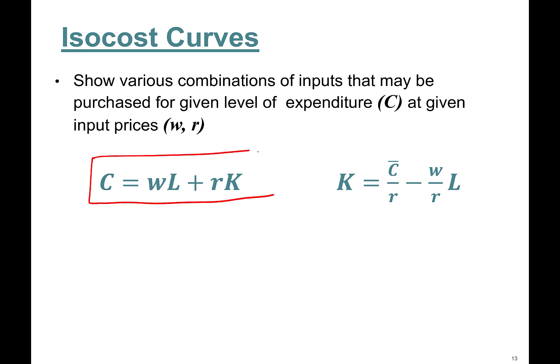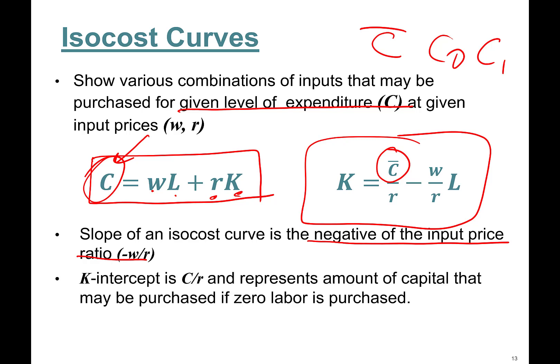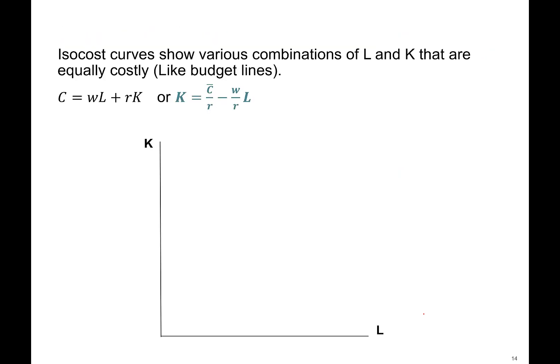So again, this is just the PowerPoint slide. Total cost: wL plus rental rate times number of capital. You can rearrange again. This C, C-bar here means it is constant. It can be C-bar, C0, C1, whatever you call it. It's basically saying there is a given level of expenditure. Okay, slope of an isocost curve is the negative of the input price ratio: negative w over r. Negative of the price of whatever you have on the x-axis divided by the price of whatever input you have on the y-axis. K-intercept, capital, the y-intercept is cost divided by cost of capital and represents amount of capital that may be purchased if zero labor is hired, and vice versa too.